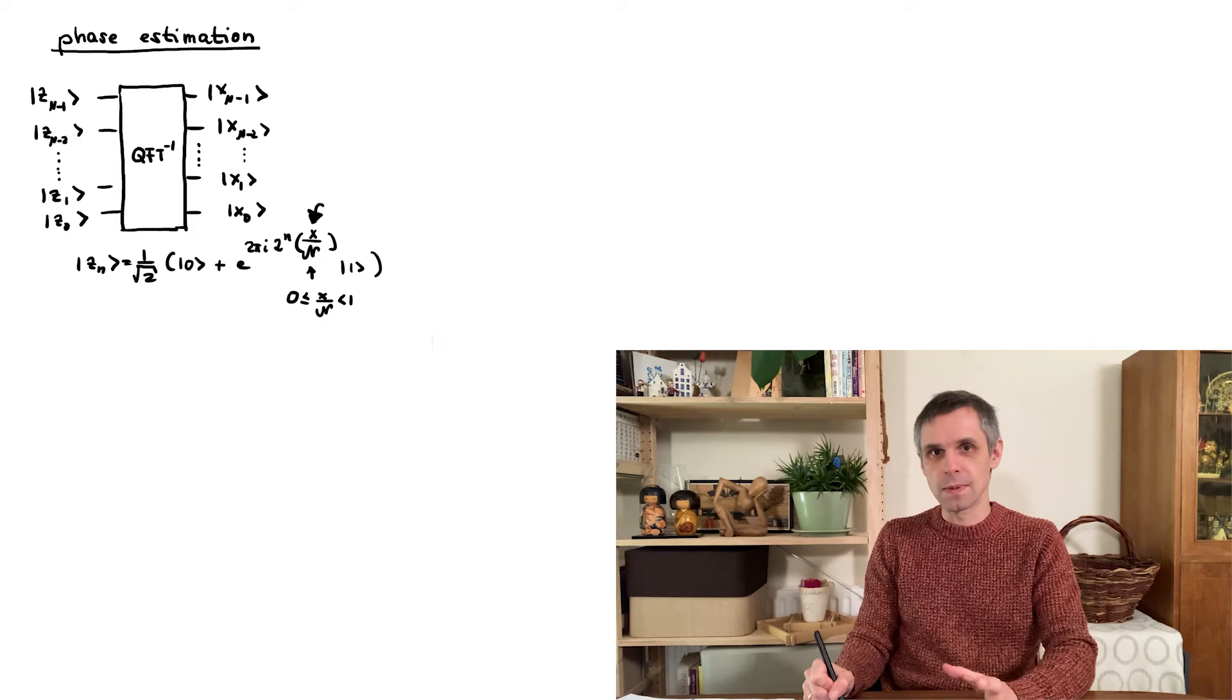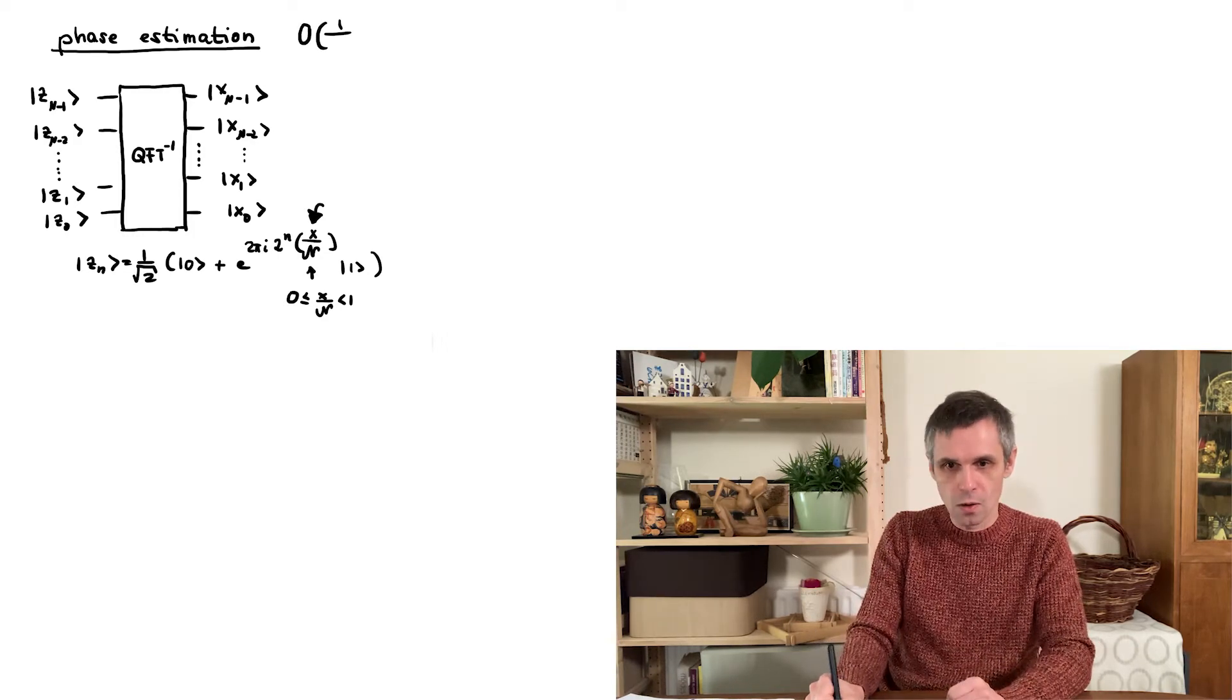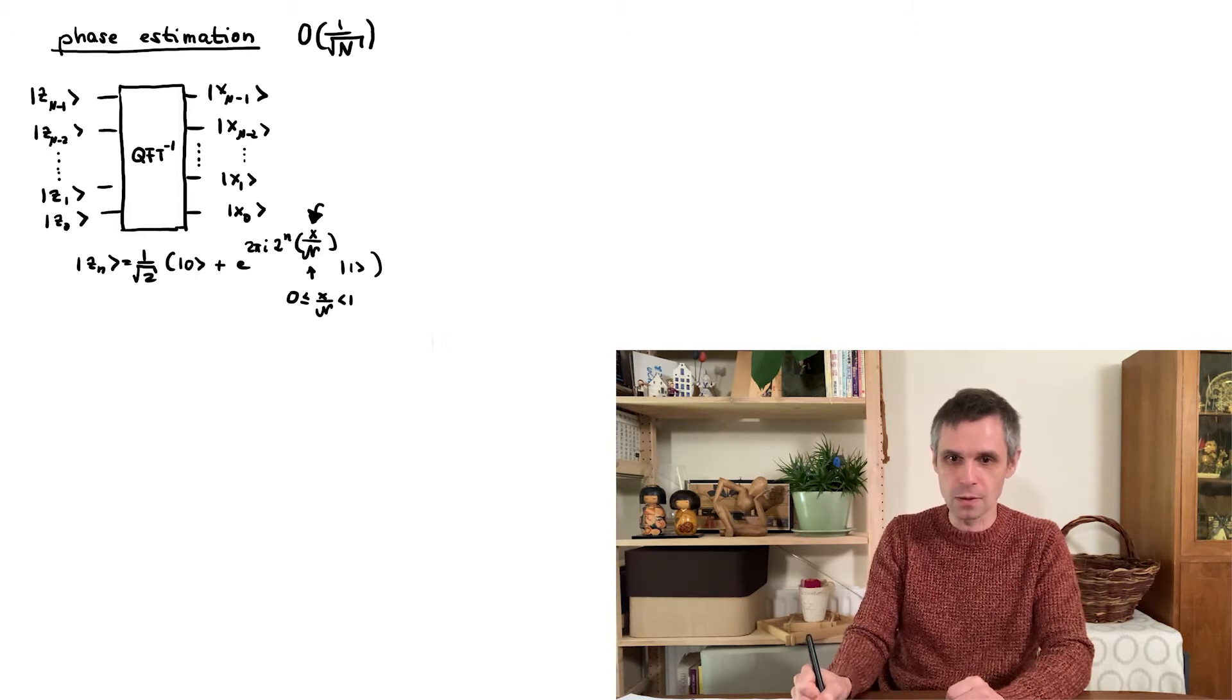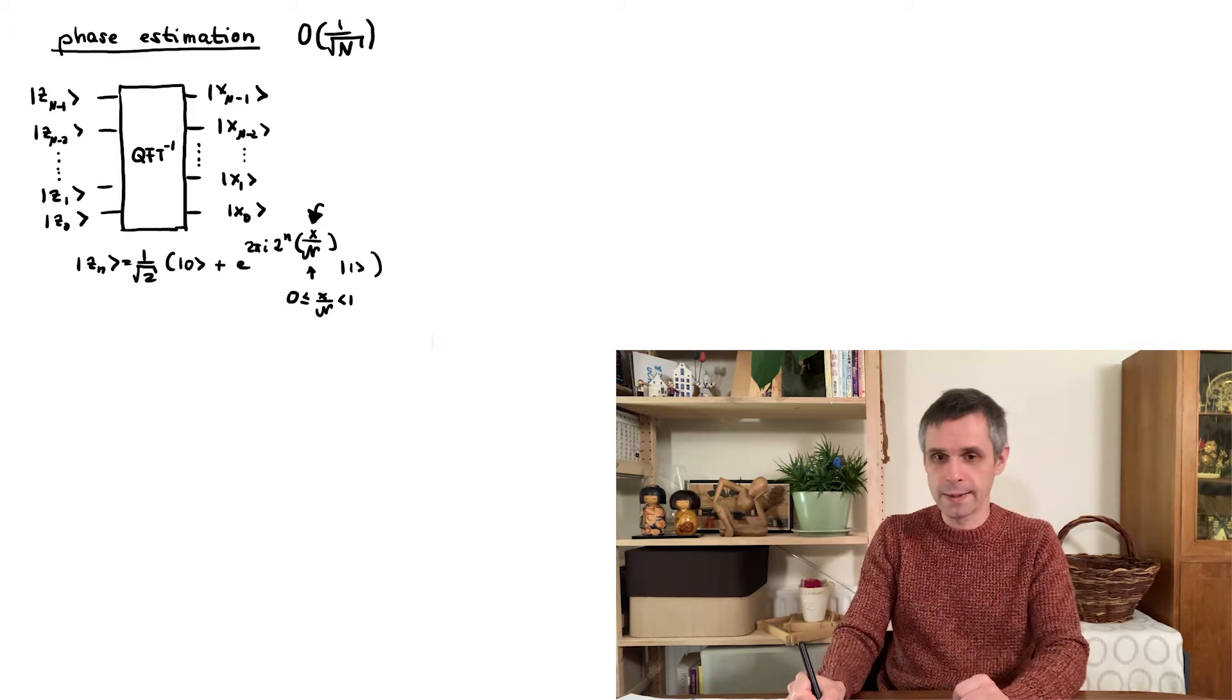And when you measure the phase in this way, then you get statistical fluctuations, which are of the order of one over the square root of the number of measurements that you carry out.